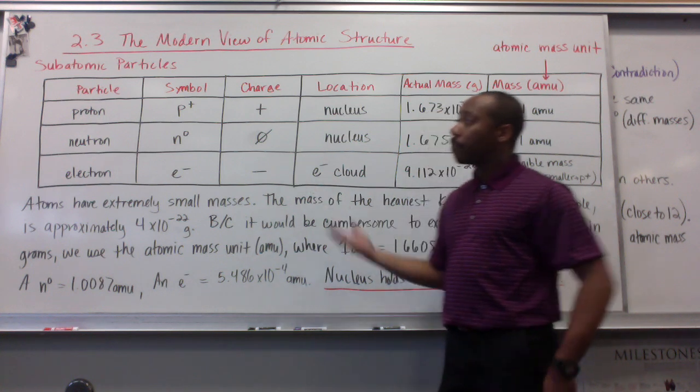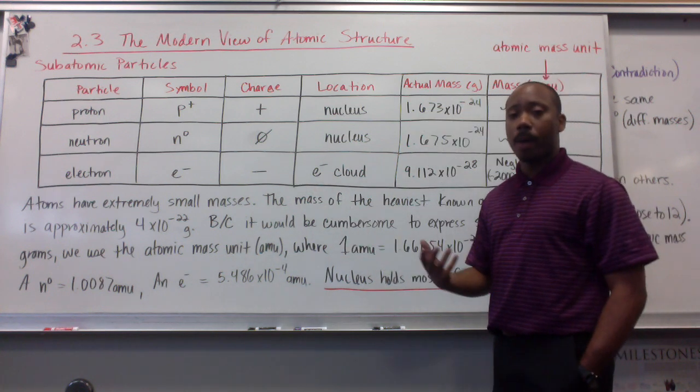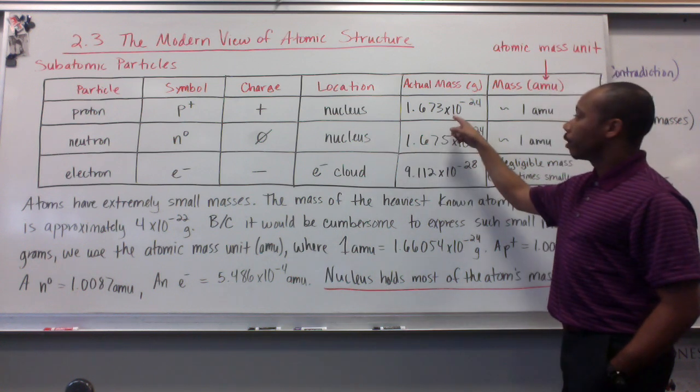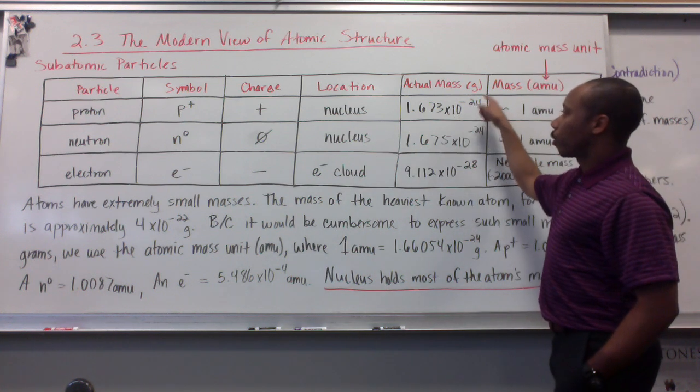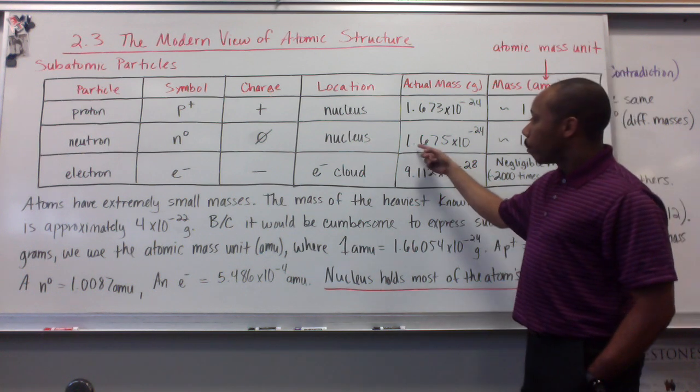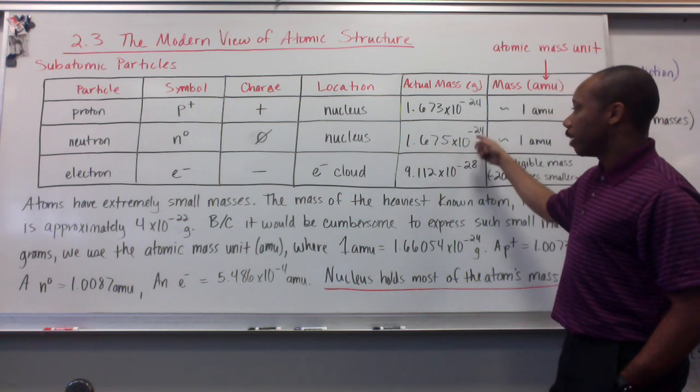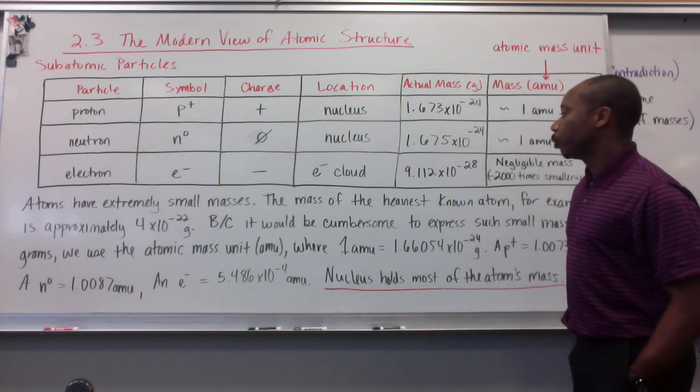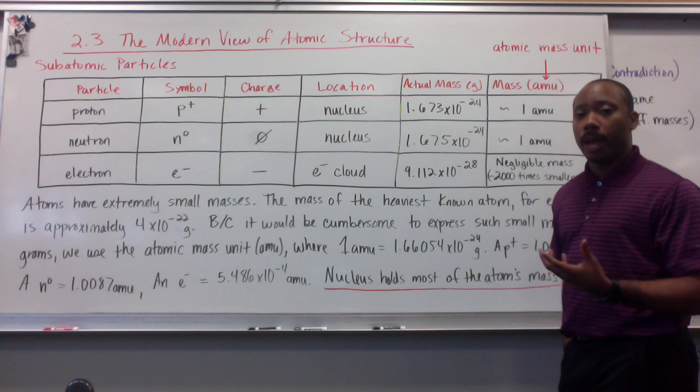Now, these particles have masses, because they are made of matter. All matter contains mass. The mass of a proton is 1.673 times 10 to the negative 24th gram. That's its actual mass. Neutrons, very similar, 1.675 times 10 to the negative 24th grams. And electrons, 9.112 times 10 to the negative 28th grams.